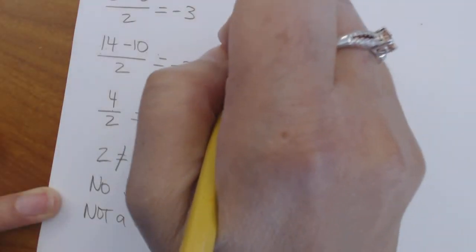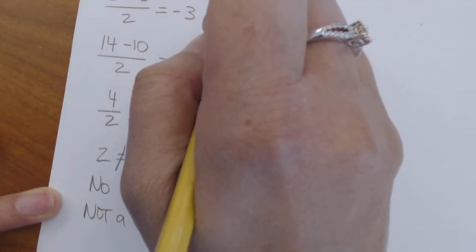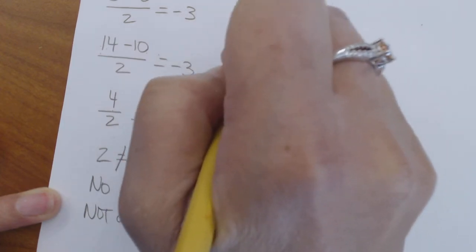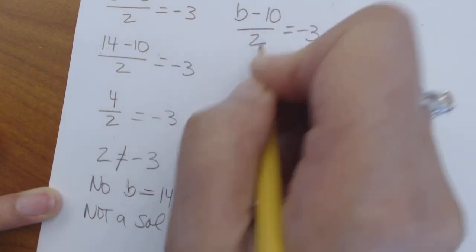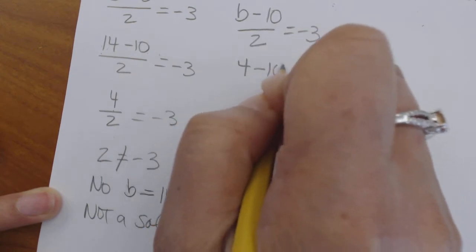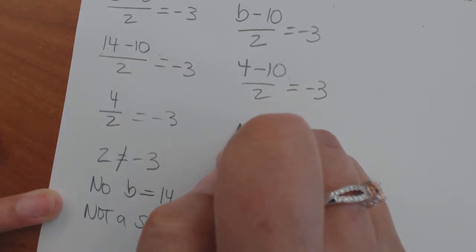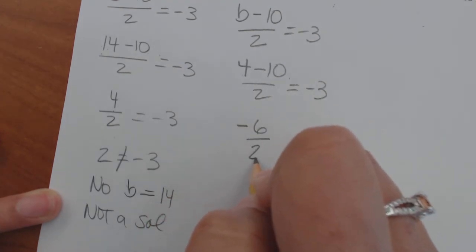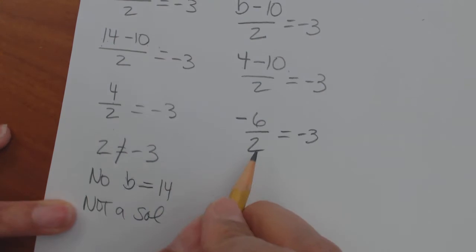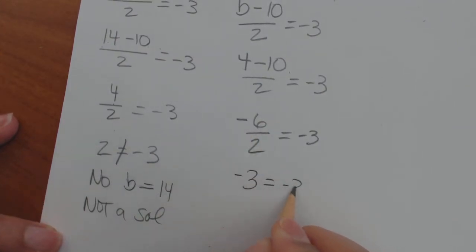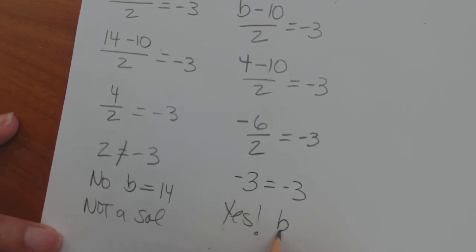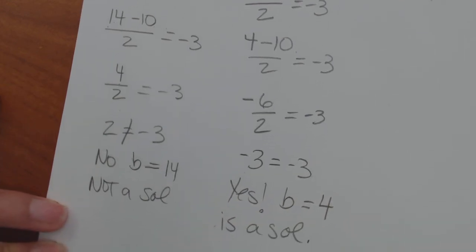Let's try if it equals positive 4. b minus 10 over 2 equals negative 3. Let's try this one. So 4 minus 10 over 2, does that equal negative 3? Let's do the numerator first. 4 minus 10 is going to give us negative 6 over 2. I can already see it, can you? Because negative 6 divided by 2 is negative 3. That does equal negative 3. They are equal. This is balanced. So yes, b equals 4 is a solution.